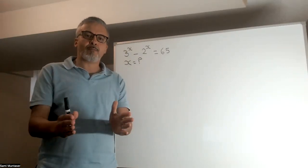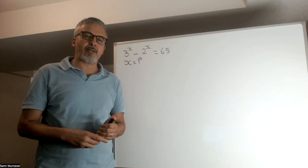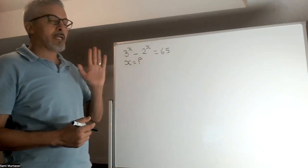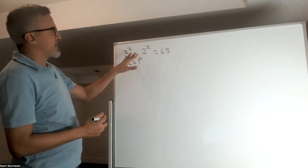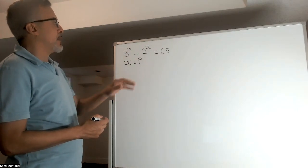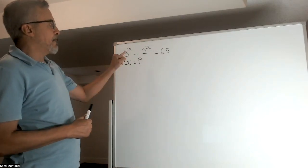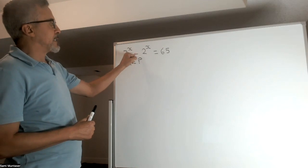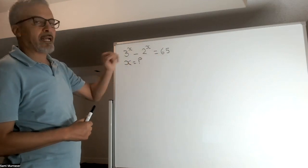So, welcome back to my channel, Sammy's A-plus Learning. We're going to do this question. It's a question that looks a little bit hard for the average student. 3^x minus 2^x equals 65. We're trying to find x.